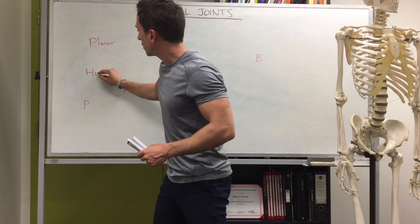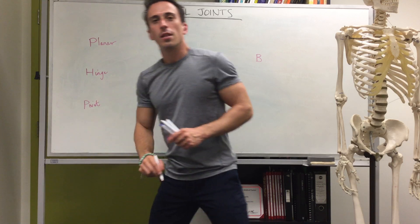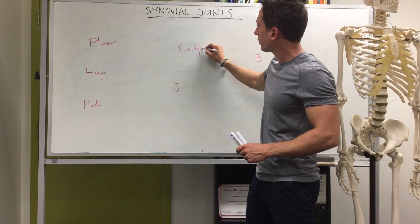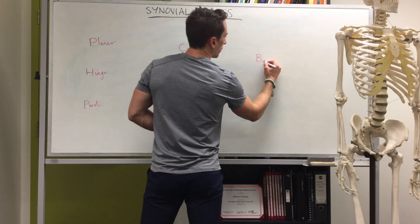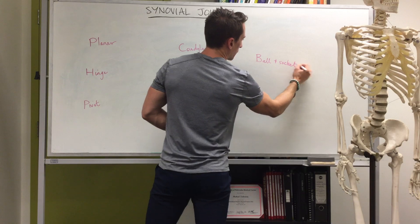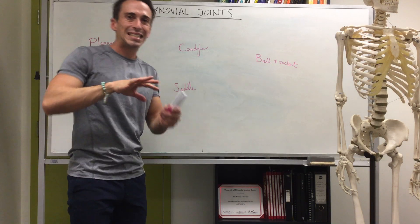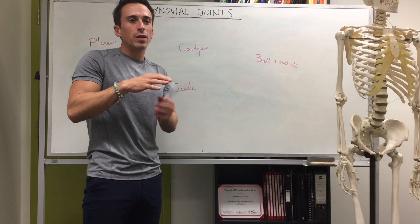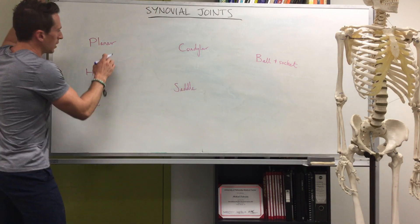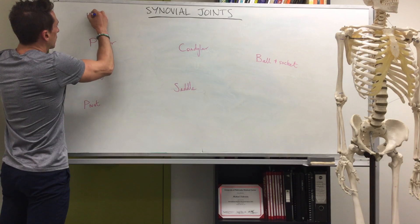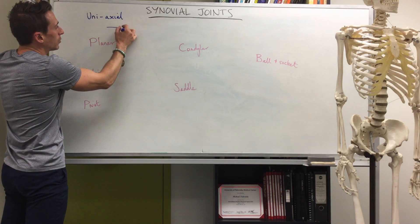The six types of synovial joints are: planar joint, hinge joint, pivot joint, condylar joint, saddle joint, and ball and socket joint. I've listed them in order from least movable to most movable — or moving in the least number of planes to the most. Planar, hinge, and pivot joints are uniaxial, meaning they only move in one plane — either back and forth, or up and down, or left and right.